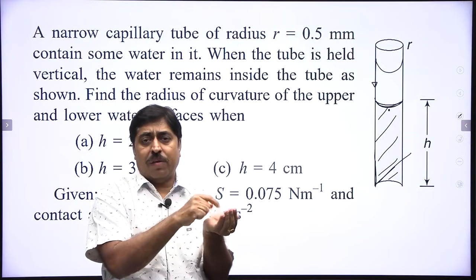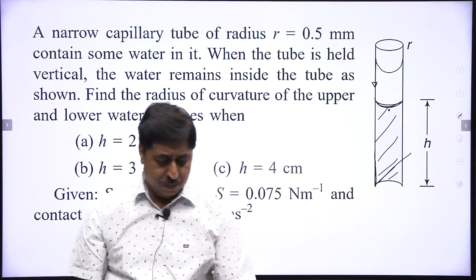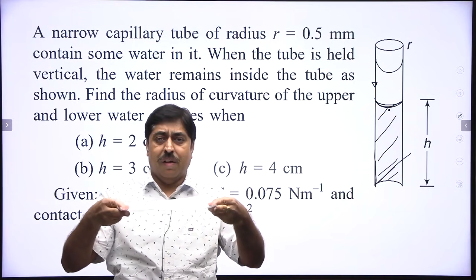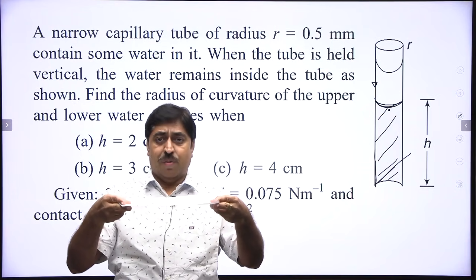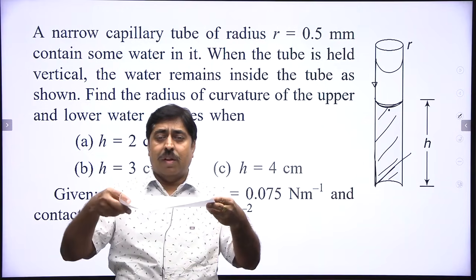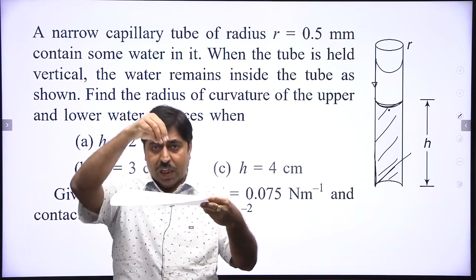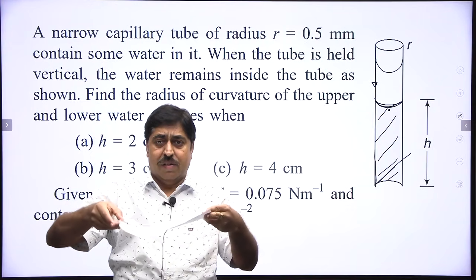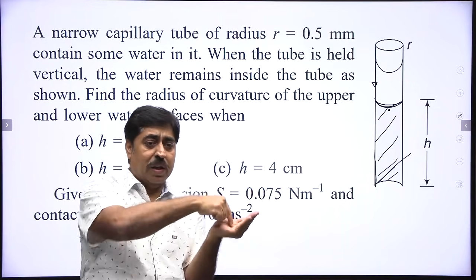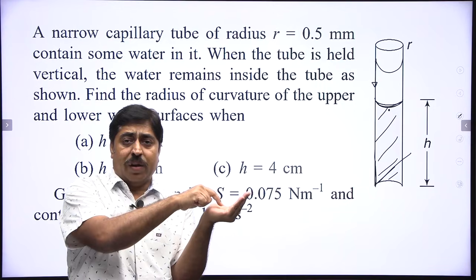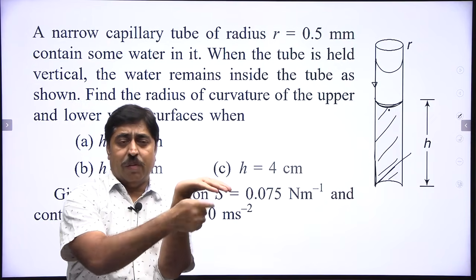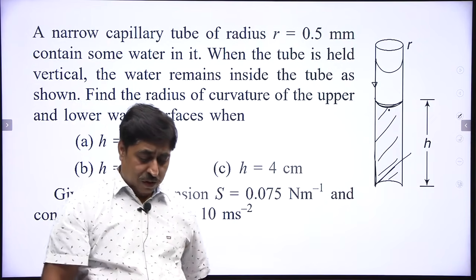Pressure on the concave side is higher than on the convex side. This is straightforward to understand because all liquid surfaces behave like a stretched flexible membrane. If the pressure on both sides is the same, the membrane remains flat. If you increase the pressure on one side, it curves — so the concave side always has higher pressure. This is common knowledge.